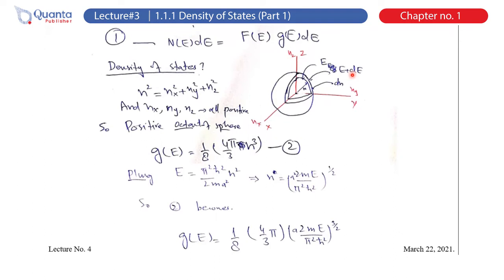Since the quantum numbers nx, ny, and nz are all positive numbers, only one of the eight octants of the 3D sphere contributes to the density of states. The positive coordinates nx, ny, and nz each lie in just one octant, so only one-eighth of the total sphere is relevant.